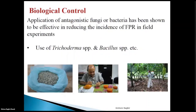Biological control using application of antagonistic fungi or bacteria has shown to be effective in reducing incidence of Frosty Pod Rot in field experiments. Countries such as Costa Rica and Nicaragua have conducted field trials with Trichoderma and Bacillus — antagonistic fungi and bacteria — and these have worked, so there are viable avenues for biological control.